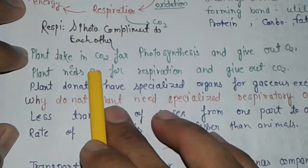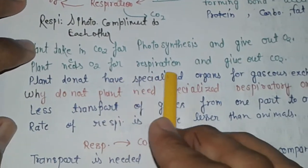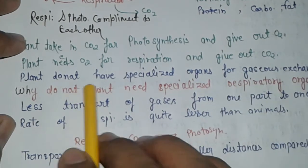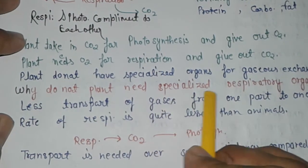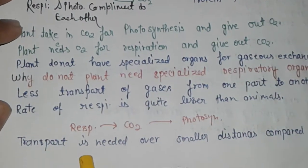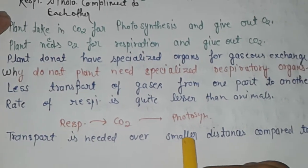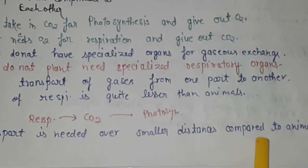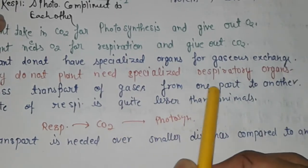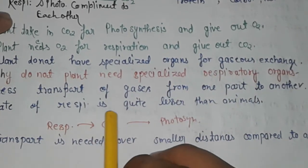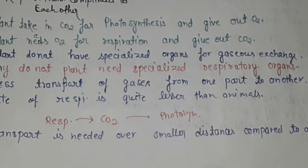Plants take carbon dioxide for photosynthesis and give out oxygen. Plants need oxygen for respiration and give out carbon dioxide. Plants do not have specialized organs for gaseous exchange. Why do we not need specialized respiration organs? Because the transfer is needed over a small distance compared to animals. The transport of gases from one part to another in respiration is quite less compared to animals. So we can say that plants do not need any specialized respiration organs.